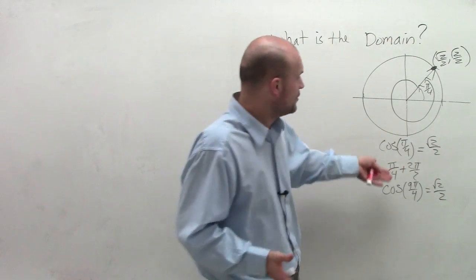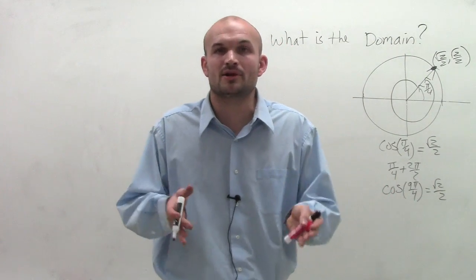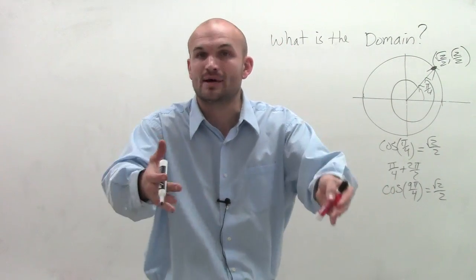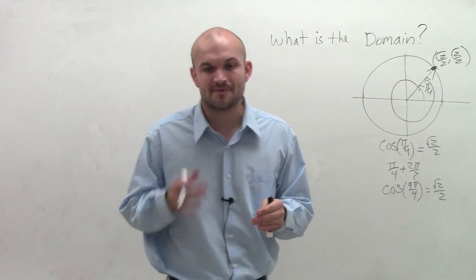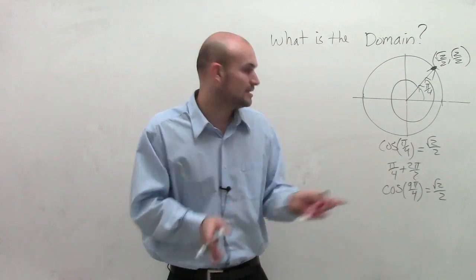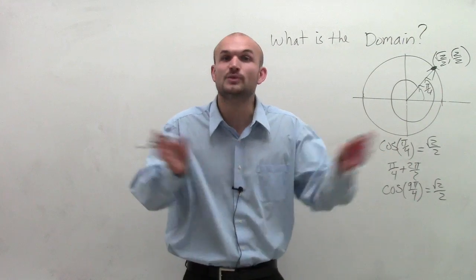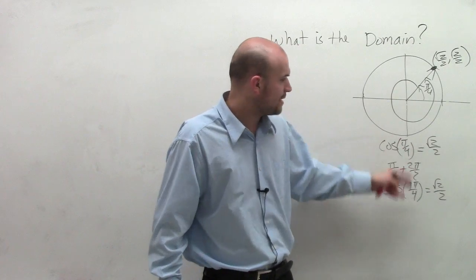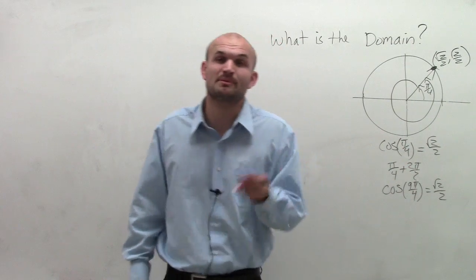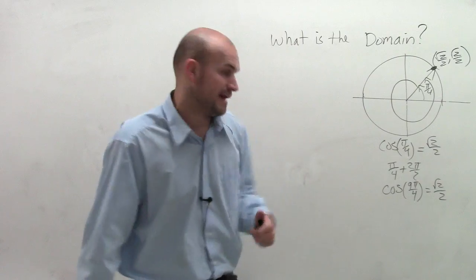And so what's important is we can evaluate that. When you're finding the domain, it's OK if you plug in a number and you get the same point. That's OK. As long as you're not plugging in a point like pi over 4 and you're getting two different values.